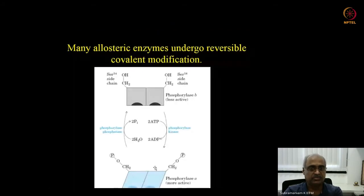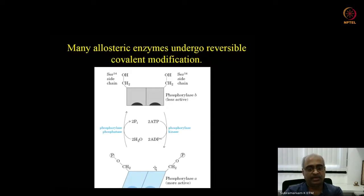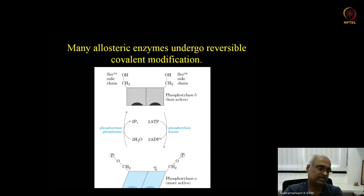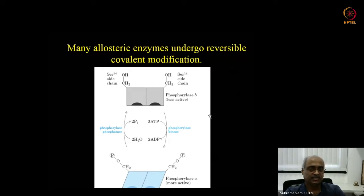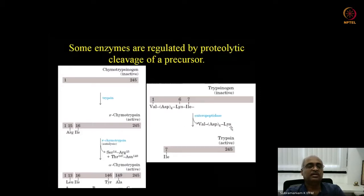Phosphorylation-based regulation is widespread among a very large number of proteins. When originally discovered its prevalence was not realized, but later this discovery was considered a profound, conceptually advancing finding in biochemistry, and the scientists were awarded the Nobel Prize for discovering phosphorylation as an important enzymatic regulatory mechanism.